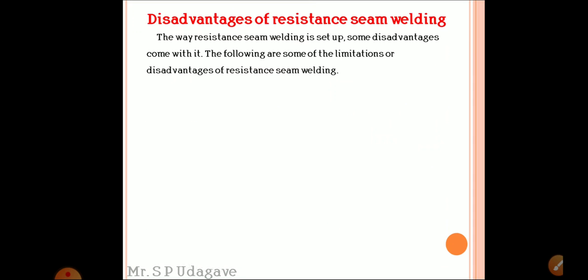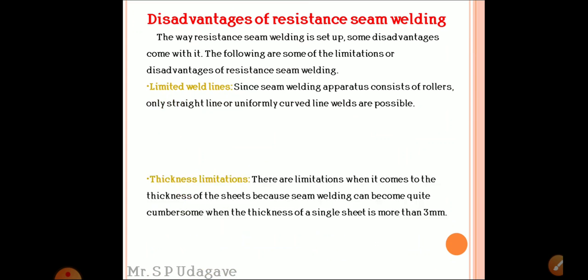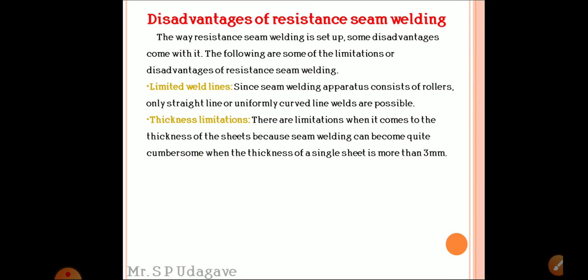Disadvantages of resistance seam welding: the way resistance seam welding is set up, some disadvantages come with it. First one is limited weld lines - since seam welding apparatus consists of rollers, only straight line or uniformly curved line welds can be performed with this method.